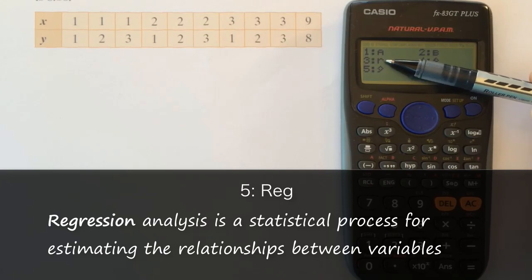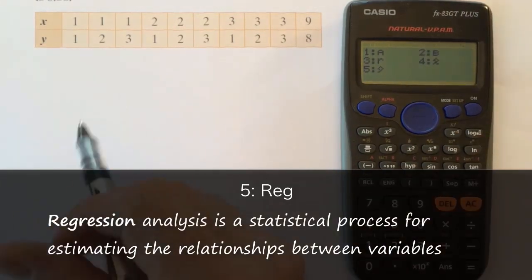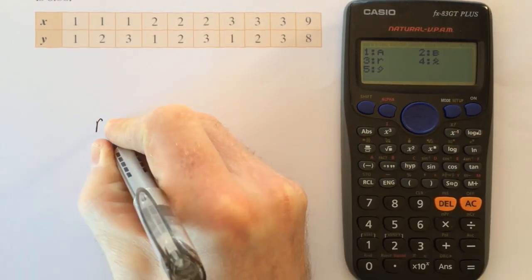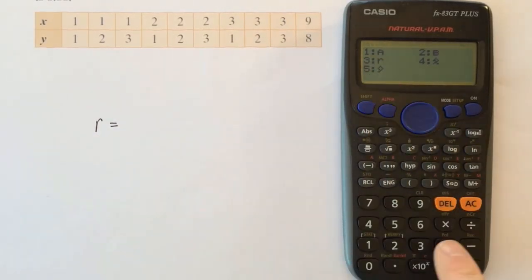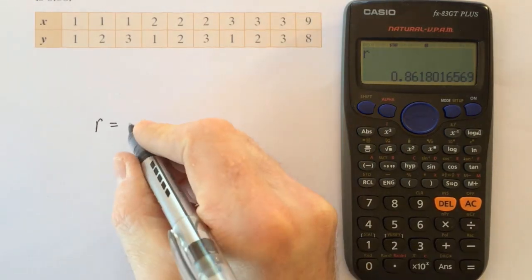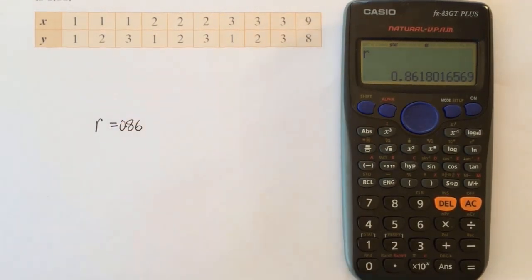And this is the letter for correlation coefficient R. So in this question, I'm trying to see what does R equal. So option 3 is R and press equals. And I see the answer is roughly 0.86.